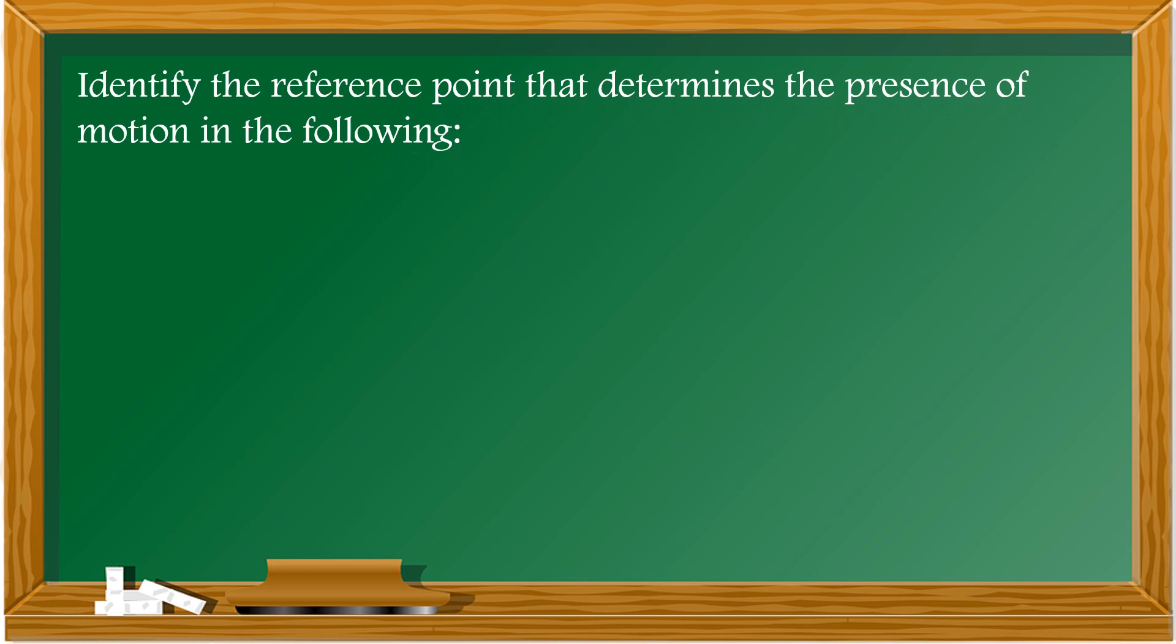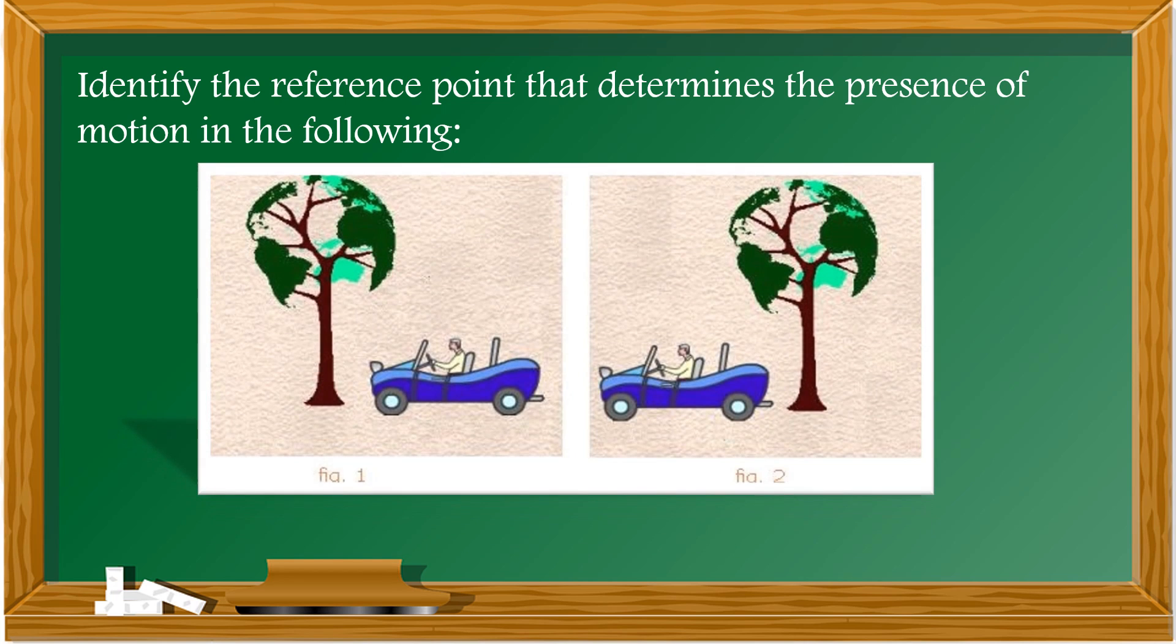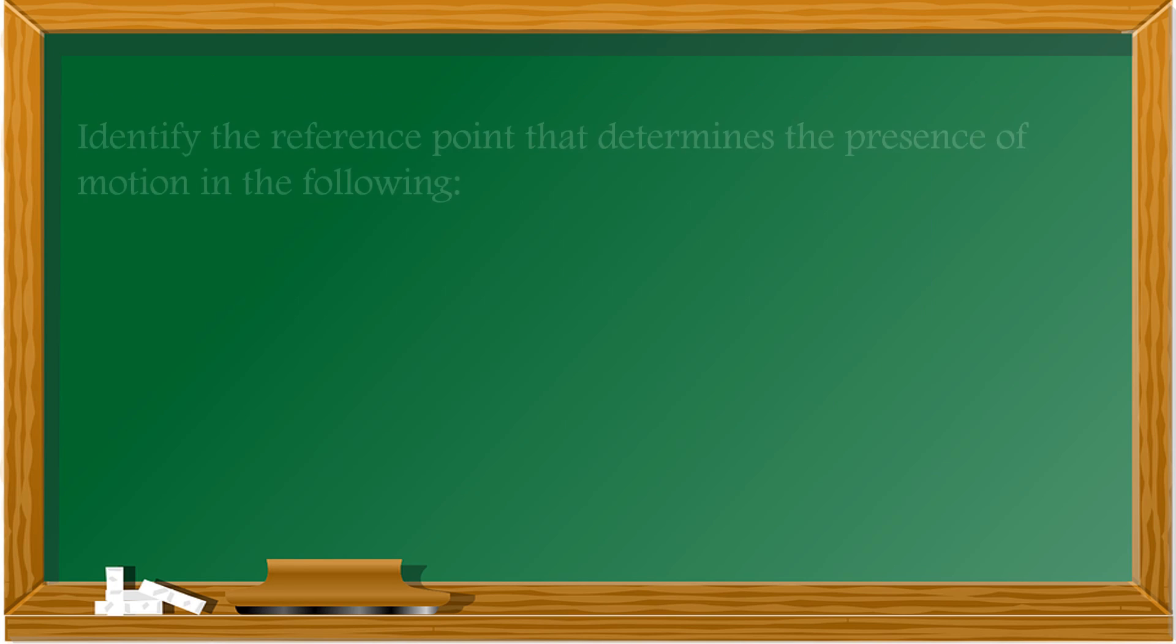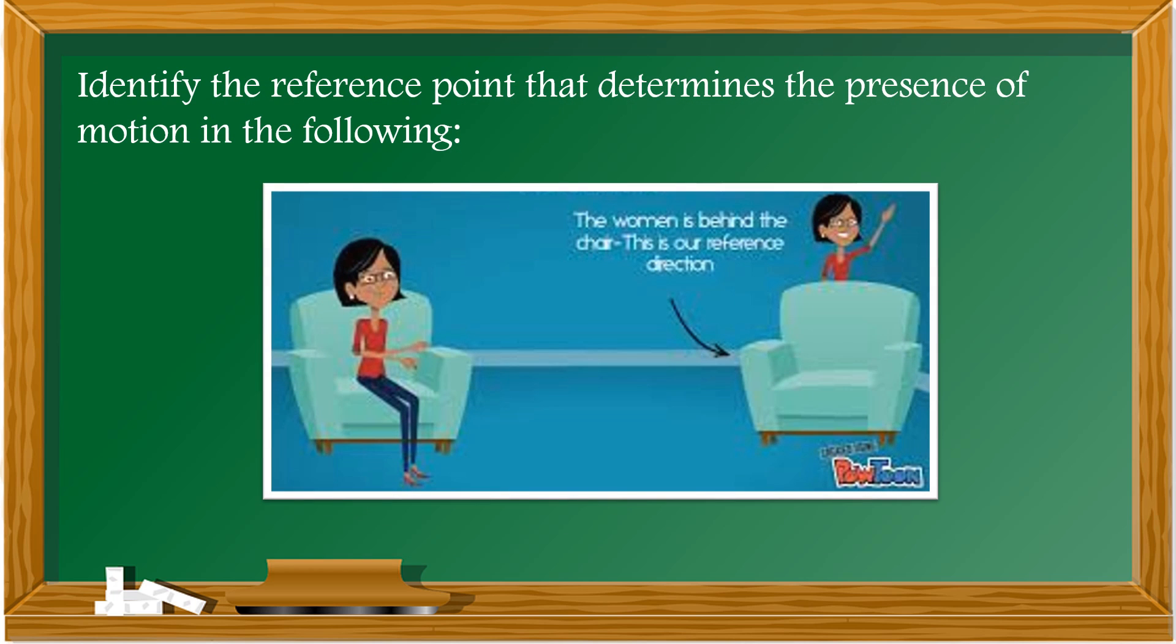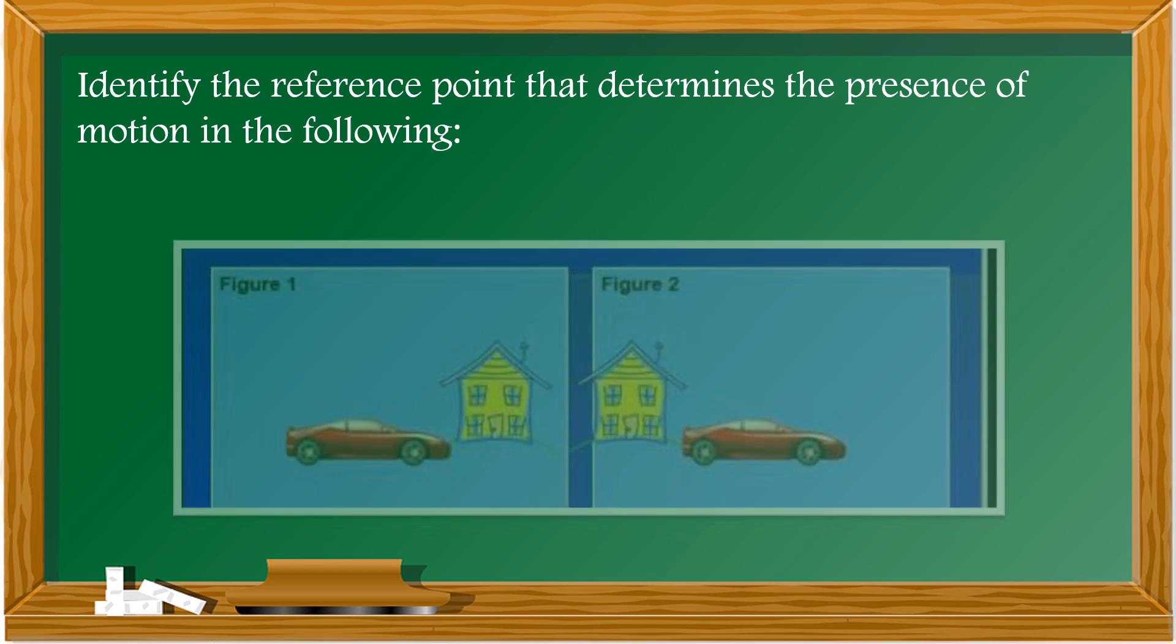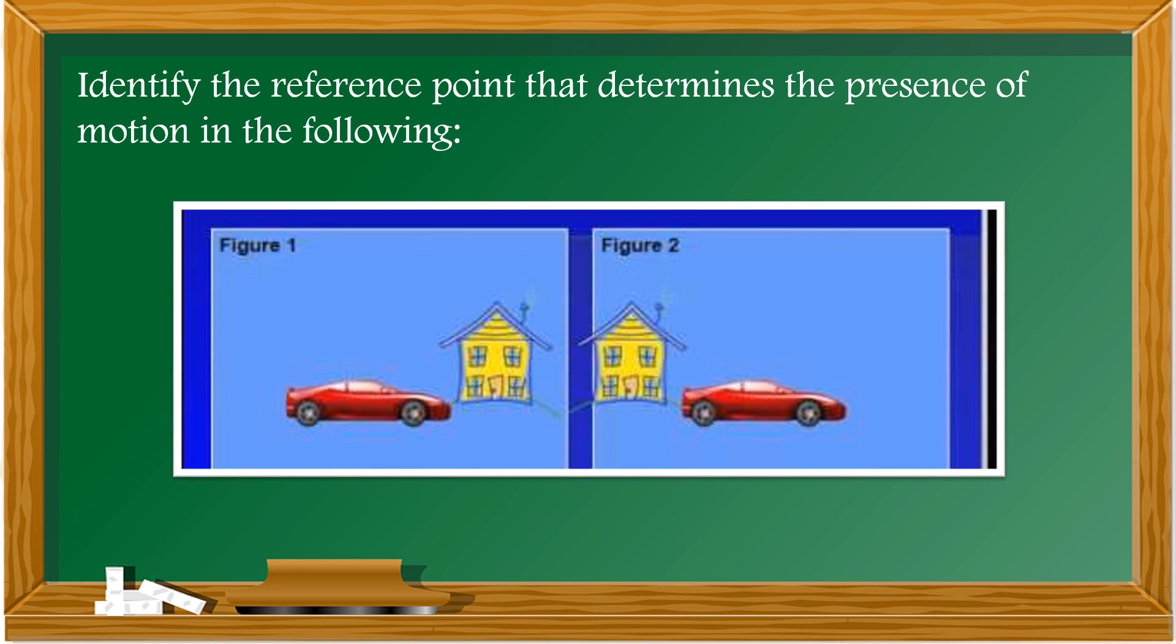Identify the reference point that determines the presence of motion in the following. First picture, the reference point is the tree. Second picture, the reference point is the chair. Third picture, the reference point is the house.